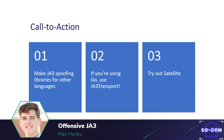So I have three call to actions. First, JA3 Transport is a Go library — this work should be done for all languages that red team tools are developed in. Second, if you're writing red team tools in Go, try implementing JA3 Transport in your project. And for Satellite: please use it and let me know if there are any issues or ideas you have with the project — it's the only way I can make it better. I hope you learned something from this presentation, and enjoy the rest of SOCON.